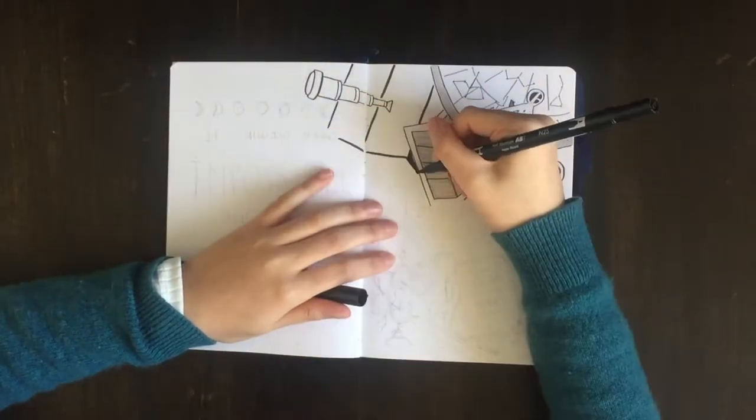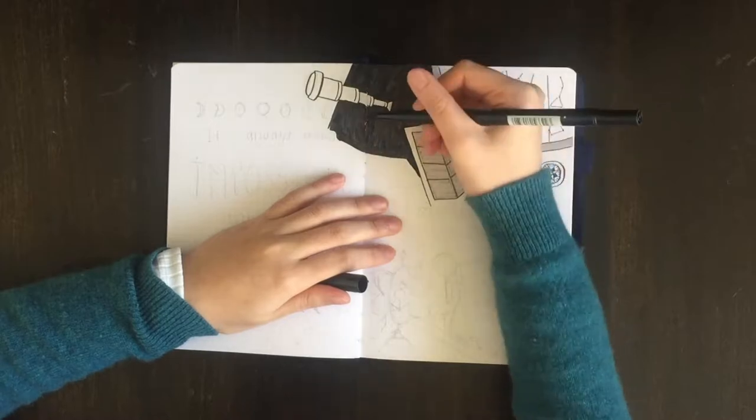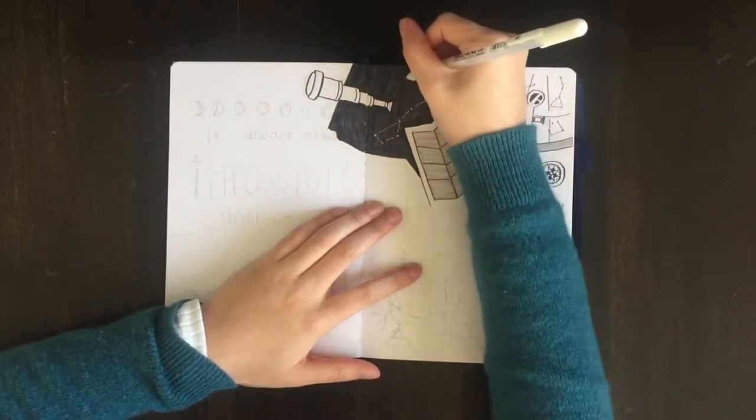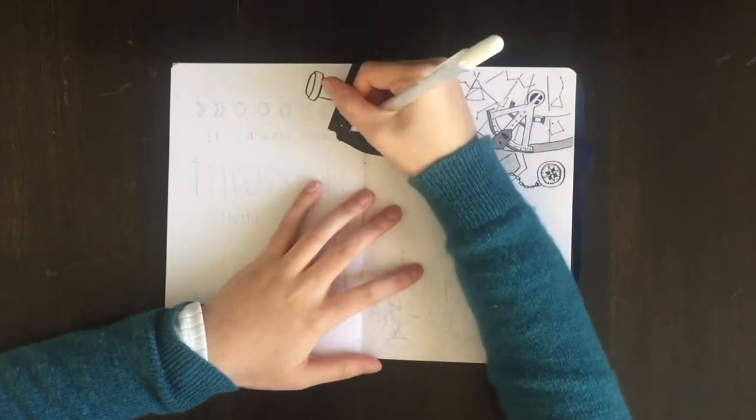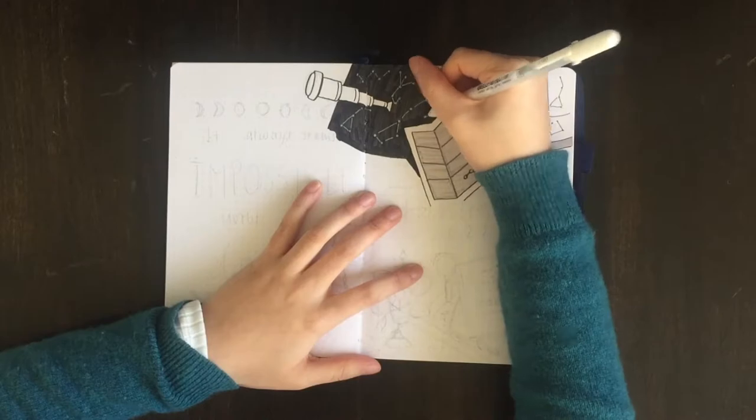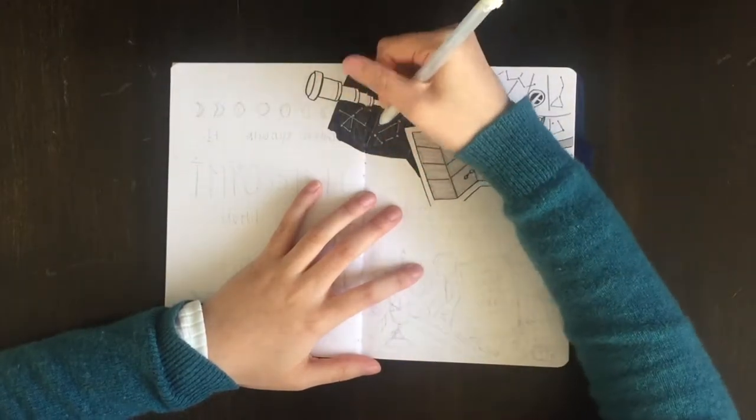For this theme, I really wanted to utilize a lot of my white sakura jelly roll pens, so I'm coloring in the maps in black and dark gray in order to highlight that. I thought it turned out really well and super pretty.